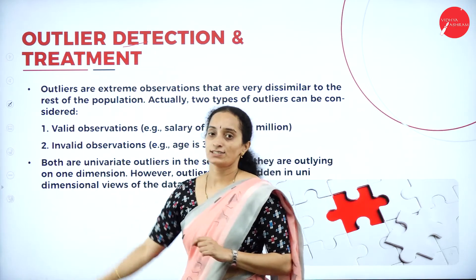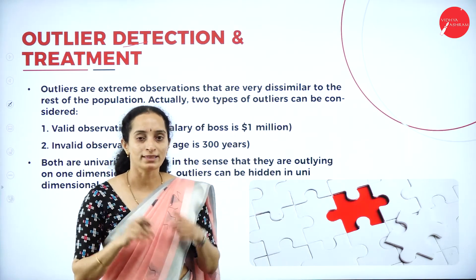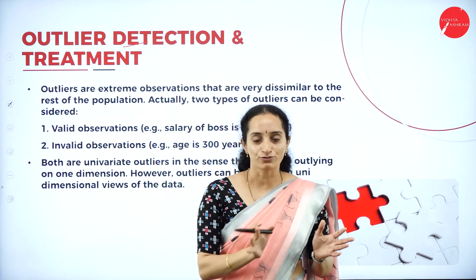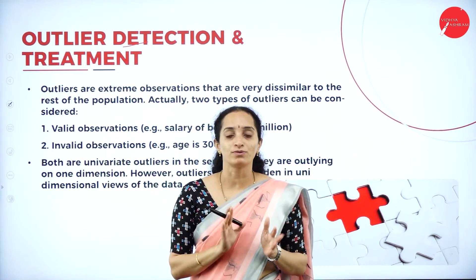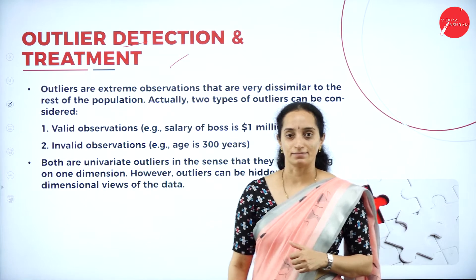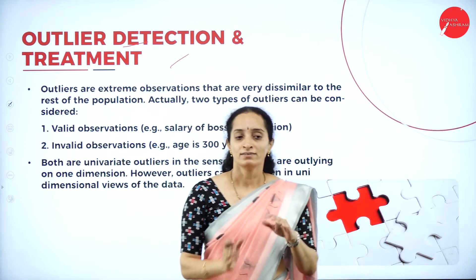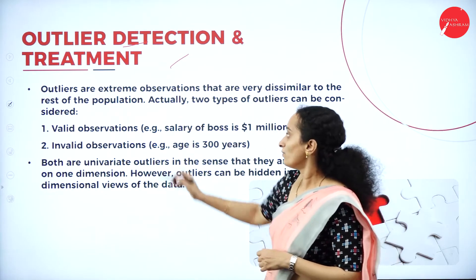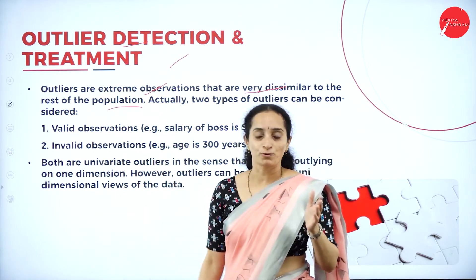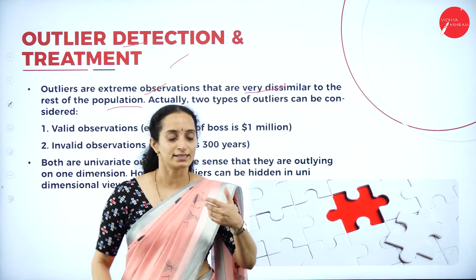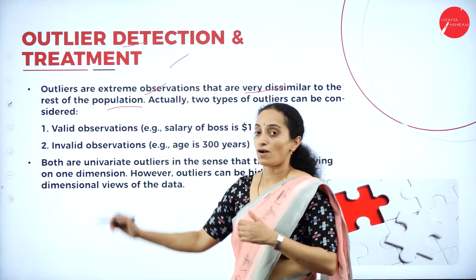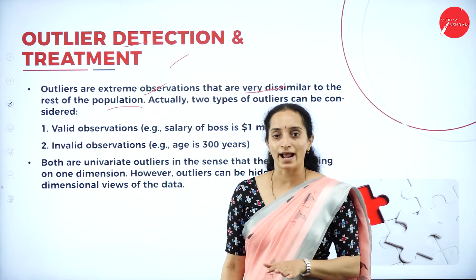Next is outlier detection and treatment. What is an outlier? We have all kinds of data, but we have some data which are abnormal — like an odd man out — which doesn't belong to any group. Outliers are extreme observations that are dissimilar to the rest of the population. When compared to other data, this data is totally different. It cannot be included in the pre-processing or analysis. That kind of data is called an outlier — outside the group, like an odd man out.